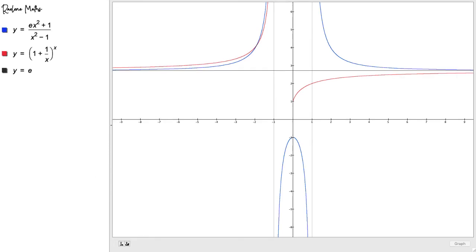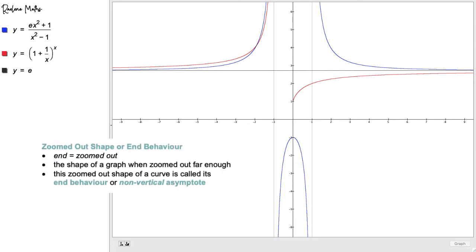The horizontal, slant, and parabolic asymptotes are just three examples of end behavior asymptotes. The end behavior of a graph is its shape when we zoom out far enough. When we look at the equation of that shape, it's called the end behavior or non-vertical asymptote.